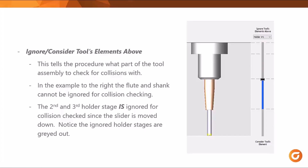'Ignore/Consider Tool Elements' is the first column, and we have to set this before doing any of the rest. This tells the procedure what part of the tool assembly to check for collisions with. In the example to the right, the flute and the shank cannot be ignored for collision checking. The second and third holder stage is ignored for collision checking since the slider is moved down. Notice the ignored holder stages are grayed out.